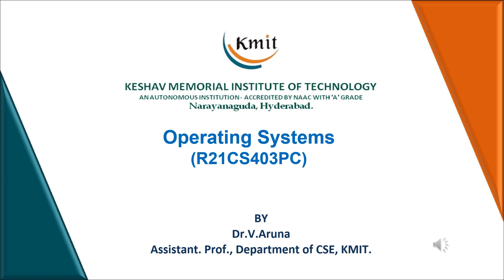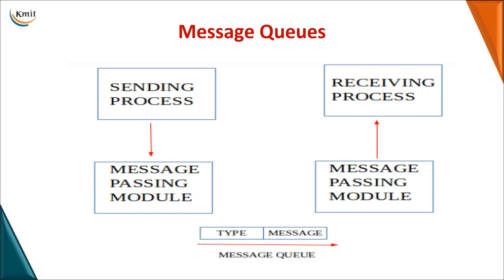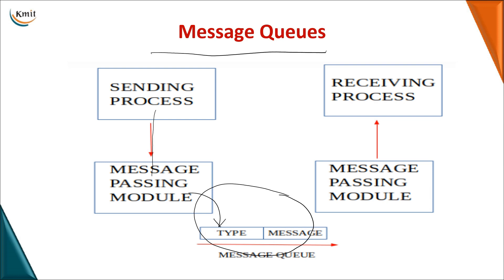In today's operating system session we'll be moving on to message queues. As we are dealing with inter-process communication, we've already seen how a pipe is used for transferring data from one process to another. Similarly, with a message queue, the sending process places messages onto the queue and the receiving process takes them. Each message is given a type, which is a long integer value, followed by the actual message content.